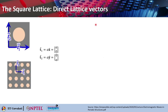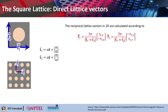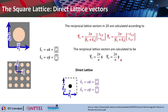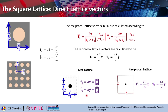The direct lattice vectors are T1 = A·x̂, written as (A, 0), and T2 = A·ŷ, written as (0, A). Using these, the reciprocal lattice vectors come out to be capital T1 = (2π/A)·x̂ and capital T2 = (2π/A)·ŷ. So to summarize: the direct lattice vectors and the reciprocal lattice vectors are shown side by side.